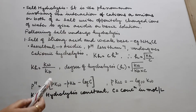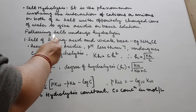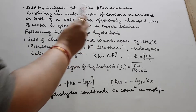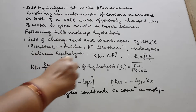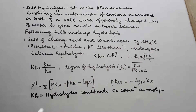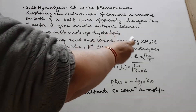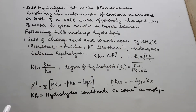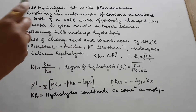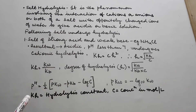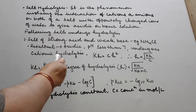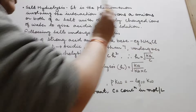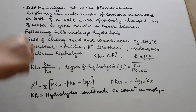The following salts undergo hydrolysis. First: salt of a strong acid and weak base. A very good example is NH4Cl, because this salt is made up of the weak base NH4OH and the strong acid HCl. The reaction is: NH4OH + HCl → NH4Cl. So this is a good example of a salt of strong acid and weak base.